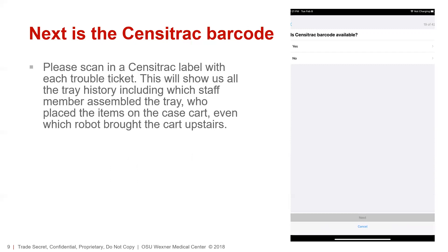Then you'll be prompted to scan in the Sensatrack barcode. This is important because it shares all of the tray history with us. It'll tell us the last time the tray was used, when that tray came back to CSS, who was in DECO cleaning it, which one of our technicians was assembling it, and which sterilizer machine the tray was placed on.